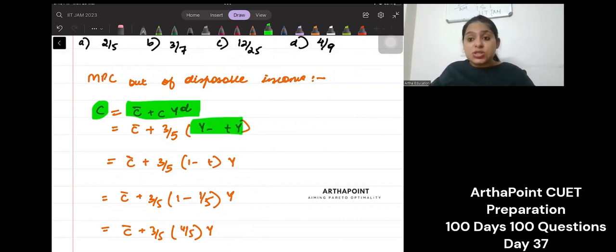You are given that this small c out of disposable income is 3 by 5. So now I can write this as C bar plus 3 by 5, and I can take (1 minus T) common into Y.